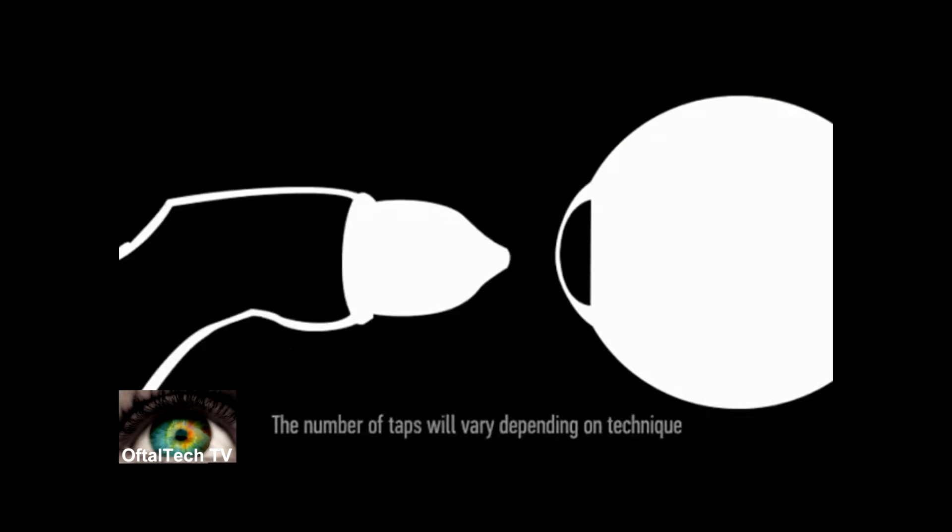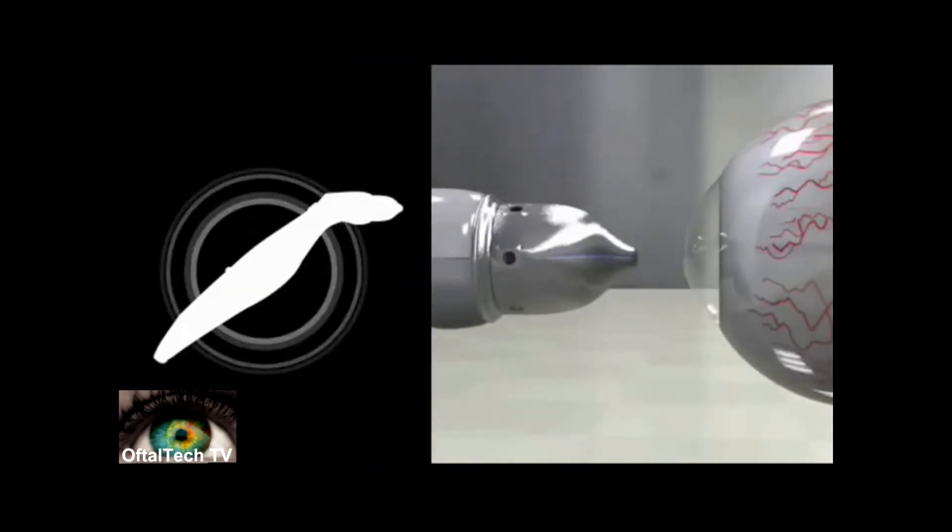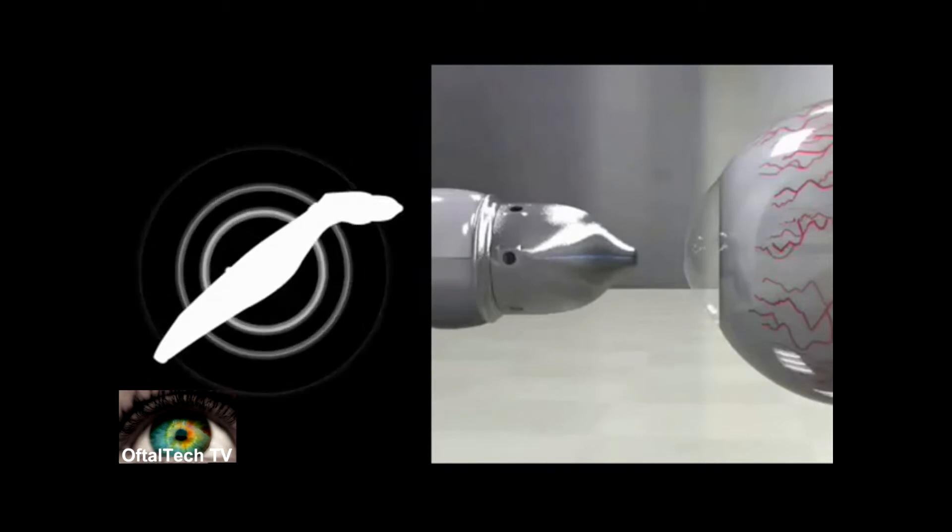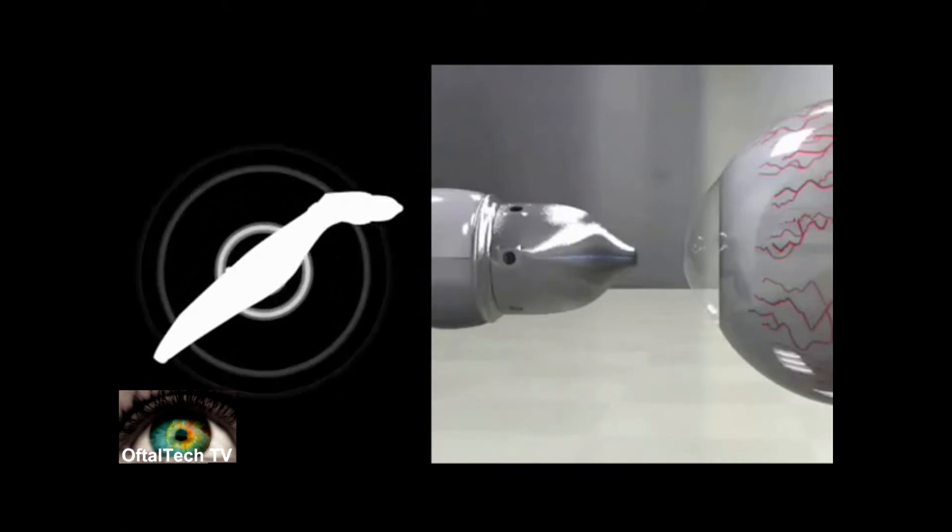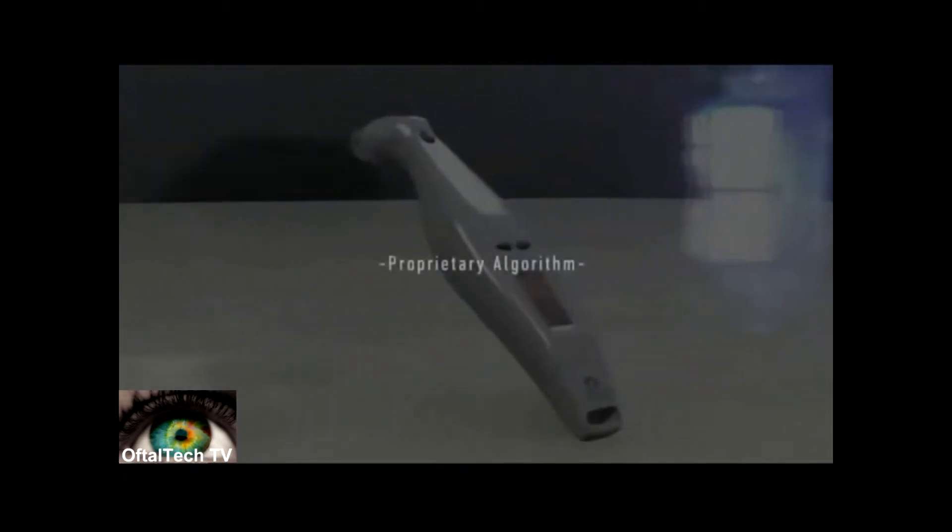As you gently tap the cornea, you will hear short chirps followed by one longer chirp. The longer chirp indicates you have obtained an IOP measurement. The number of short chirps can vary. The AccuPen has a proprietary algorithm which eliminates the need for a confidence factor.